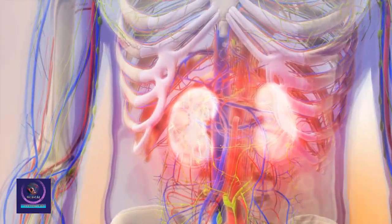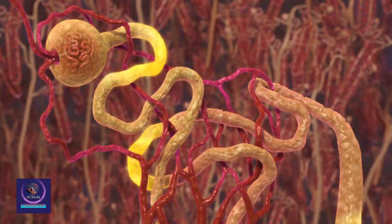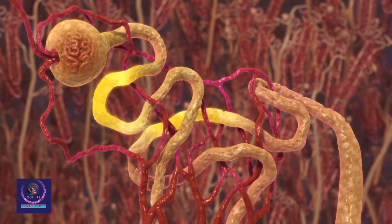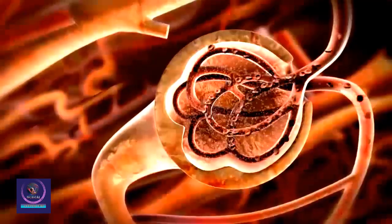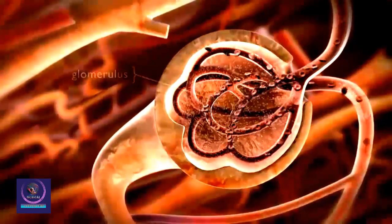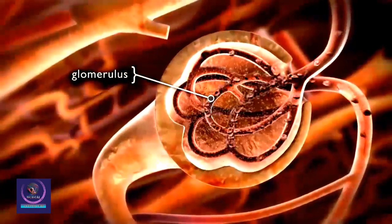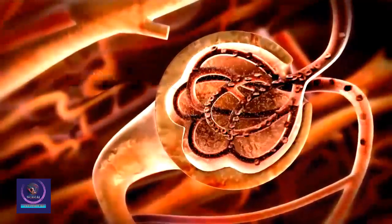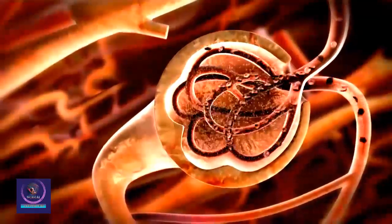The cortex of each kidney contains about 1 million nephrons. These are filtration units, each made up of a glomerulus and a tubule. The glomerulus consists of a capillary network surrounded by the glomerular Bowman's capsule. The tubule is a looped tube connected to the glomerulus.